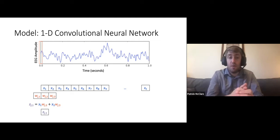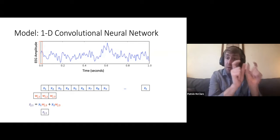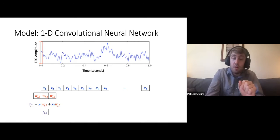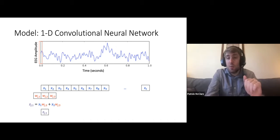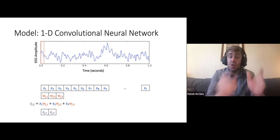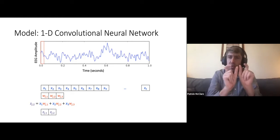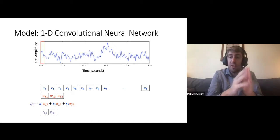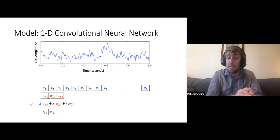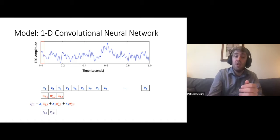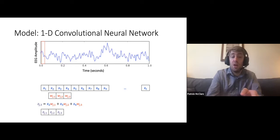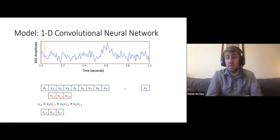Applying the filter means taking the inputs, multiplying by their corresponding weights, and then summing them together — very similar to what we've seen before. In a 1D convolutional network, we move this filter in one dimension along the time axis, centering it on each acquisition time point and applying the filter there.